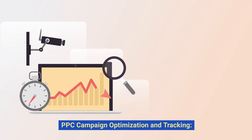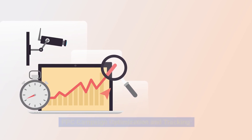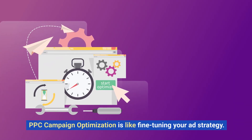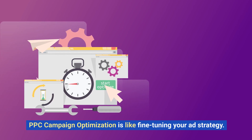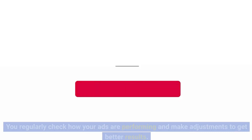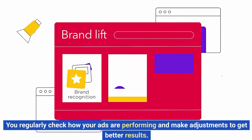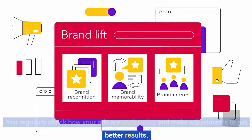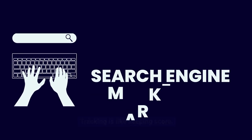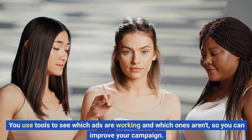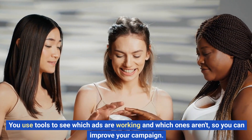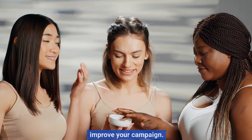PPC Campaign Optimization and Tracking. PPC campaign optimization is like fine-tuning your ad strategy — you regularly check how your ads are performing and make adjustments to get better results. Tracking is like keeping score; you use tools to see which ads are working and which ones aren't, so you can improve your campaign.